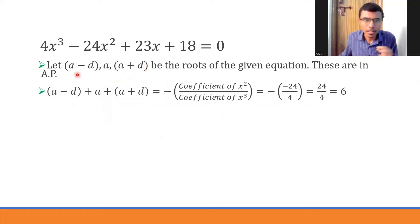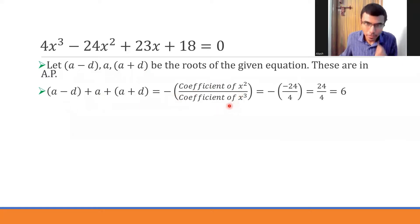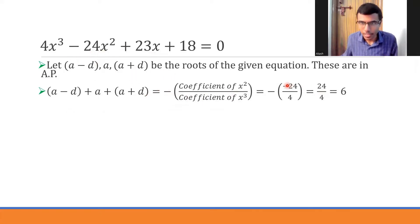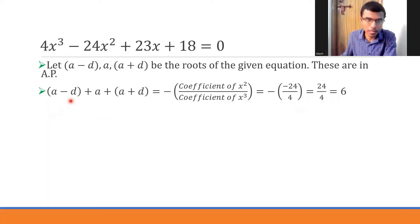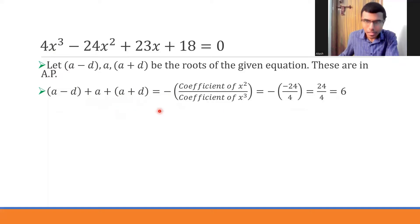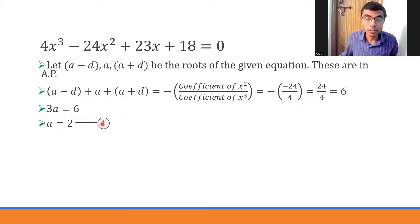The sum of the roots — a minus d, a, and a plus d — is nothing but minus the coefficient of x² divided by the coefficient of x³. The coefficient of x² is minus 24, and the coefficient of x³ is 4, so that gives 24 by 4 which is 6. On the left side, minus d and plus d cancel, leaving 3a, so 3a equals 6, meaning a equals 2. I'll mark this as equation 1.